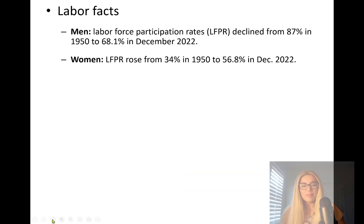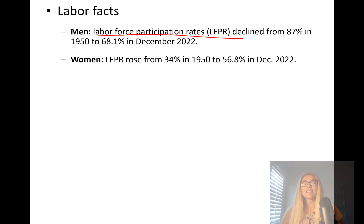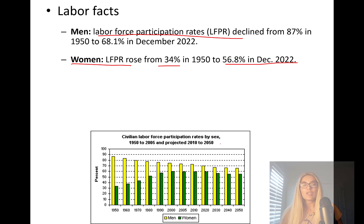Here are some important labor facts. Men always participate higher in the labor market — the labor force participation rate for men has always been higher than that of women. However, it has declined from about 87% in the 1950s to about 68% nowadays. Women's labor force participation rate (LFPR) rose from about 34% in the 50s to about 56.8% nowadays. This is the civilian labor force participation rate by gender, 1950s to 2005, projected until about 2050.